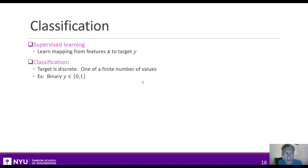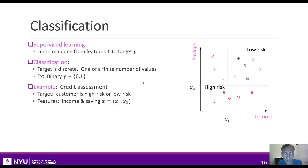What's particular about classification is that the target is discrete, meaning that it can only take one of a finite number of values. For example, when it's binary, it can only take one of two values. Consider the credit assessment problem — you want to predict if a customer at a bank is high risk or low risk. There are two possible values, so it's a classification problem.